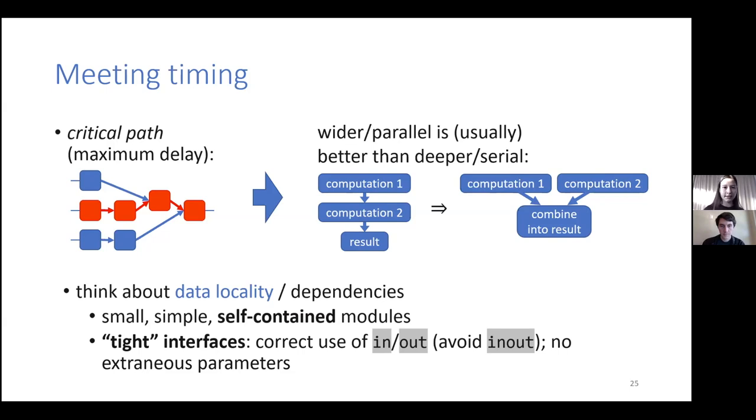This is the path that causes the maximum delay. So that would be the one that has the most operations on it or the longest operations on it. And then we want to somehow optimize this critical path. And we can do that by several methods. One thing we can do is that, as I already said, wider or doing things in parallel is usually better than doing things serially. And so if you have code where you need to make some computation, computation one, and then based on that, you make a computation two, and then you create your result. It might be worth trying to restructure the code so that you can run computation one and computation two independently, and then combine the result. So that your code is less deep and has less long dependency chains.